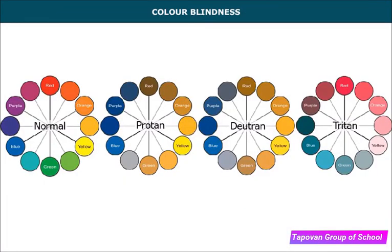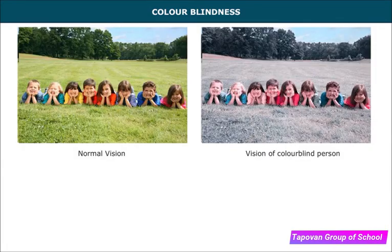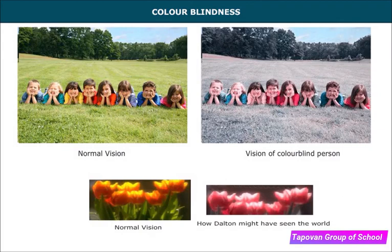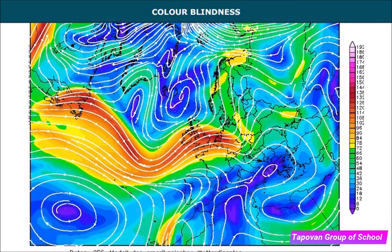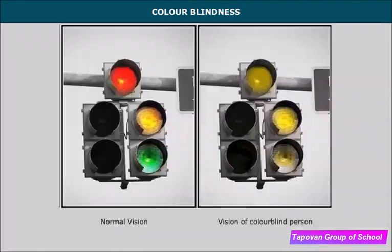Color blindness is a defect caused by the lack of certain types of cone cells that respond to particular colors, so a color-blind person cannot differentiate between certain colors. It is sometimes called Daltonism, as John Dalton, the founder of atomic theory, was color blind. Problems associated with color blindness include reading weather forecast maps on TV, interpreting traffic lights, and reading caution lights. Color-blind people learn to identify traffic light colors by position: red on top, yellow in the center, and green at the bottom.